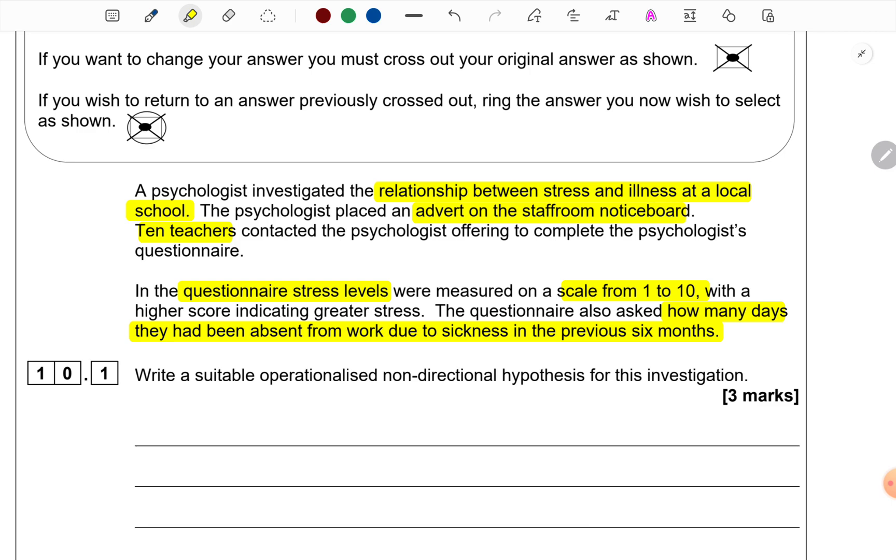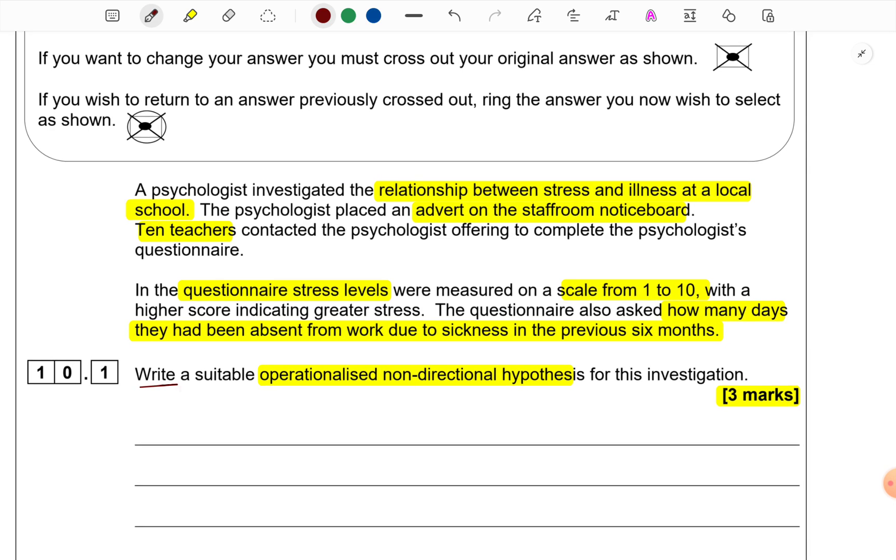Now, the question they have asked us is, write a suitable operationalized non-directional hypothesis for this investigation. This question has come for three marks. Anytime we have a question, first we should note the command term. It is just write. That means, we need not explain what is a non-directional hypothesis or anything related to that. They just want us to state the hypothesis. Neither must we evaluate. No strengths, no weaknesses required. Then we should look at the marks.